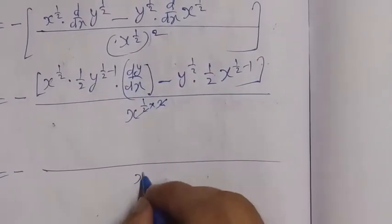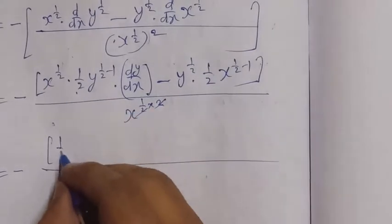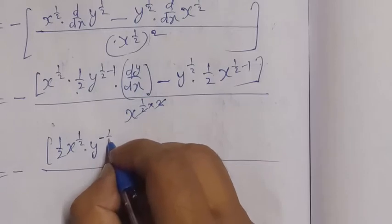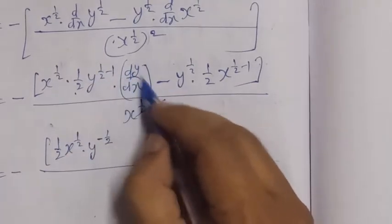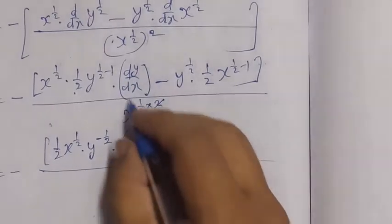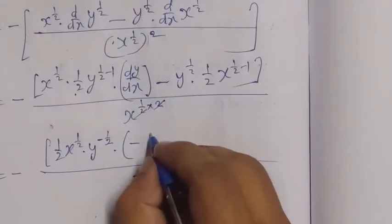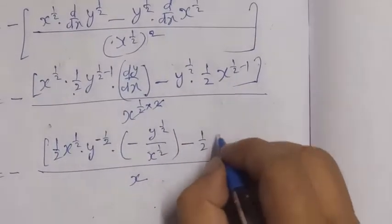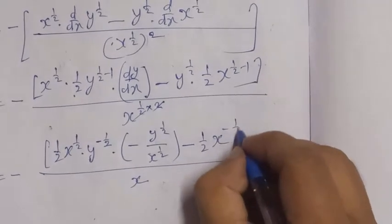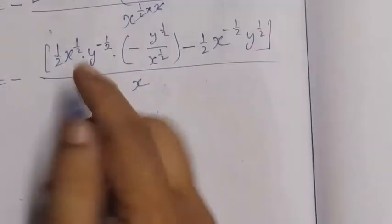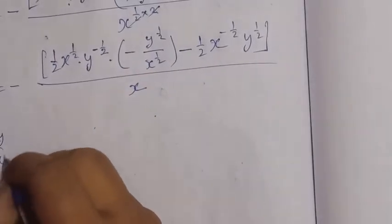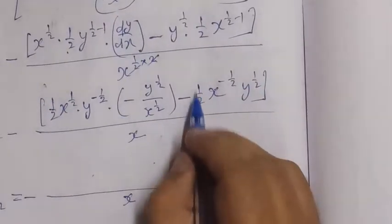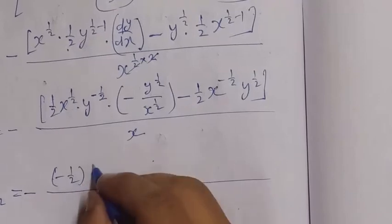Expanding and simplifying: we factor out −1/2, combine like powers, and bring terms to the denominator. We get an expression involving x^(1/2) and y^(1/2) in both numerator and denominator. Taking the LCM and cancelling, the expression simplifies. Writing √(x^(1/2)) and √(y^(1/2)), we note this relates back to the original curve equation.